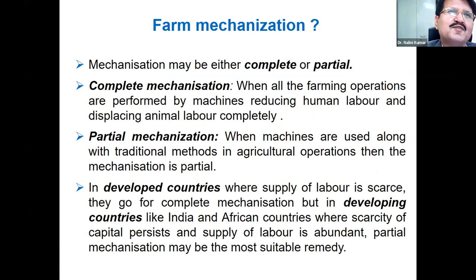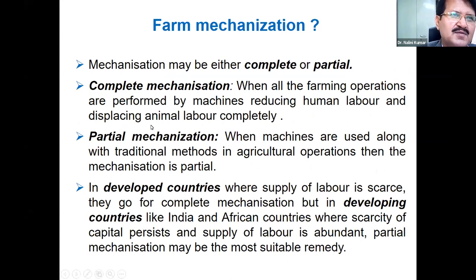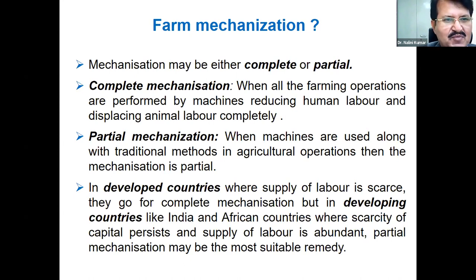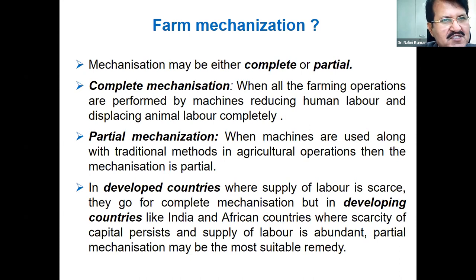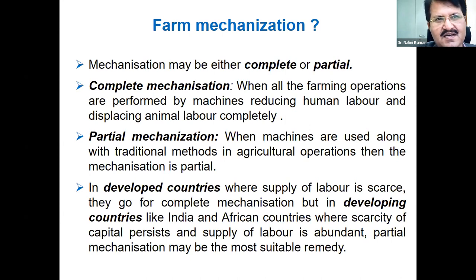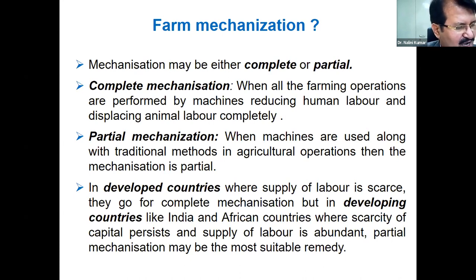Mechanization can be either complete or partial. In complete mechanization, we remove animal sources of energy while human labor remains in the process. All operations are performed by machine — this is generally practiced in developed countries where labor is scarce. In countries like India and other developing countries, partial mechanization is beneficial, where an optimal combination of all three energy sources is required.